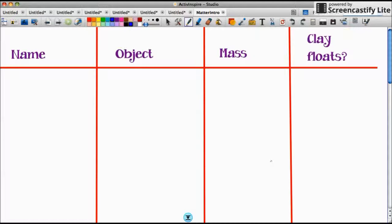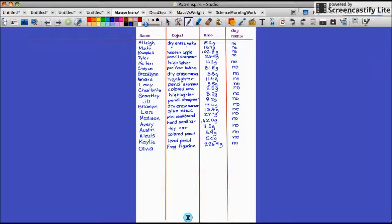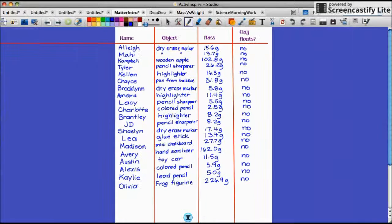Now we're going to put everybody's name on there and we're going to put what their object was, the mass of their object, and whether or not the clay floated. I'm going to zoom back out so we can look at the whole set of data. We've got the whole set of data here: every person, their objects, the mass of their objects. I see a pattern here even if the mass was high or if the mass was low, what happened when we put our clay in?